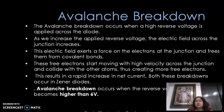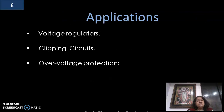Avalanche breakdown occurs when a high reverse voltage is applied across the diode. As the reverse voltage increases, the electric field across the junction increases and exerts a force on the electrons, freeing them from covalent bonds. These free electrons move at high velocity across the junction, collide with other atoms, and create more free electrons, resulting in a rapid increase in net current. Avalanche breakdown occurs when the reverse voltage is higher than 6 volts. Applications of zener diode include voltage regulators, clipping circuits, and over-voltage protection circuits.